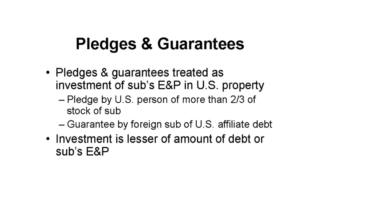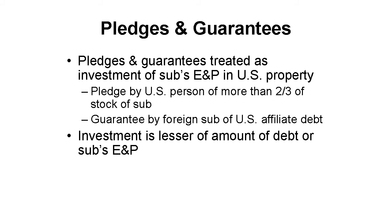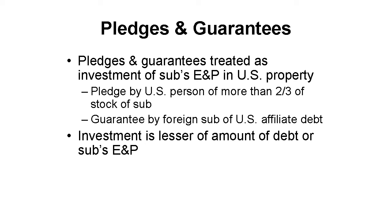The inclusion is limited to the CFC's current or accumulated E&P at year end. Here's another example: BigCo, Inc. owns Offi Limited, a Panama entity treated as a corporation for U.S. tax purposes. Offi and BigCo each guarantee a loan by Citibank to BigCo's U.S. subsidiary, Parts, Inc. The loan is for $100 million. Offi's E&P is only $5 million. BigCo, the shareholder of Offi, must include the $5 million in its income.